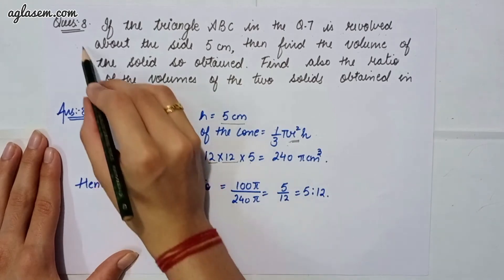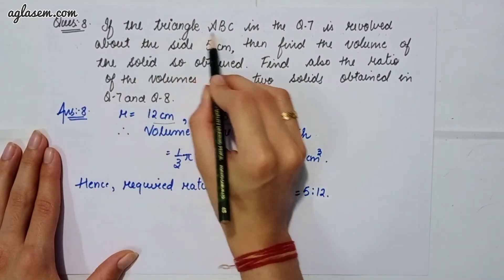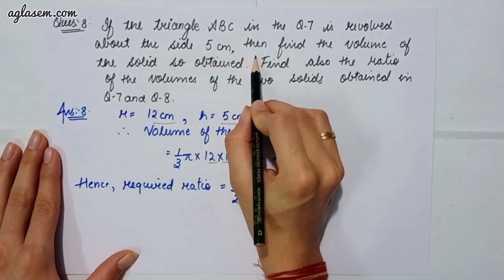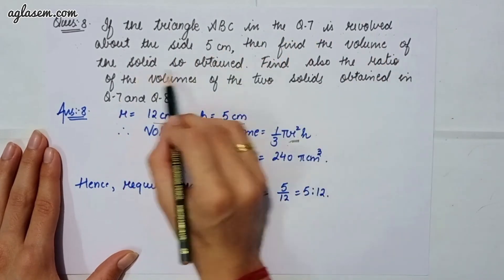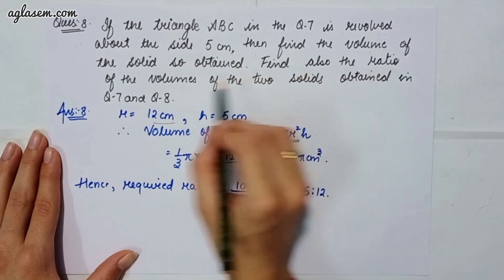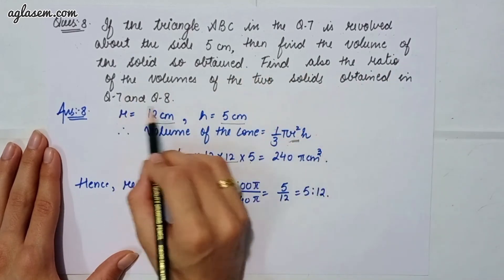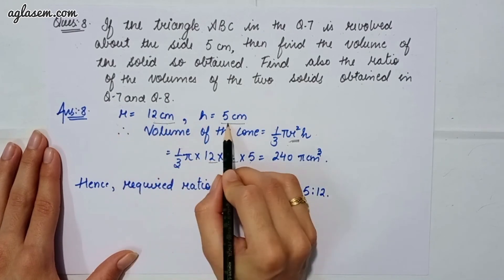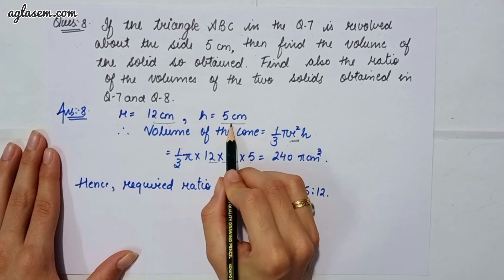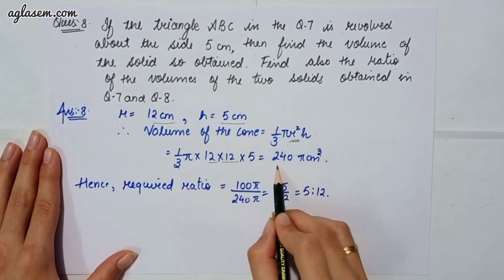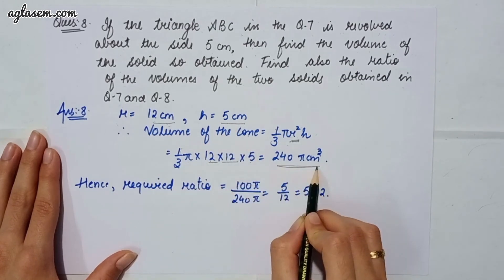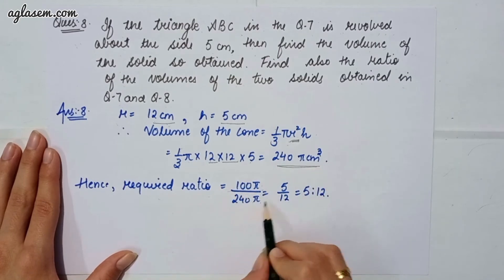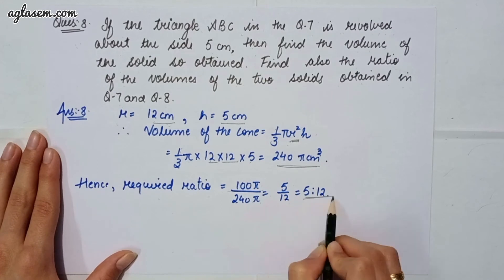Moving to question number 8: if the triangle ABC in question 7 is revolved around the side 5 cm, find the volume of the solid so obtained. Also find the ratio of the volumes of the two solids obtained in questions 7 and 8. Here radius = 12 cm and height = 5 cm. Volume of cone = 240π cm³. The required ratio is 100π / 240π = 5:12.